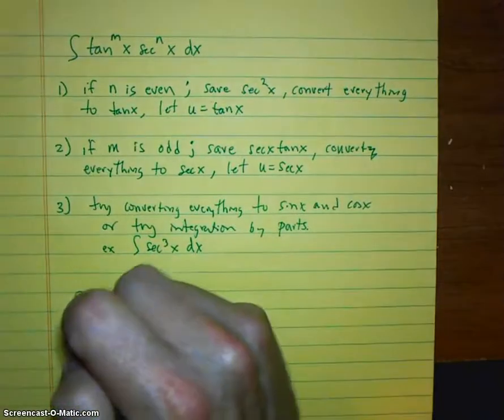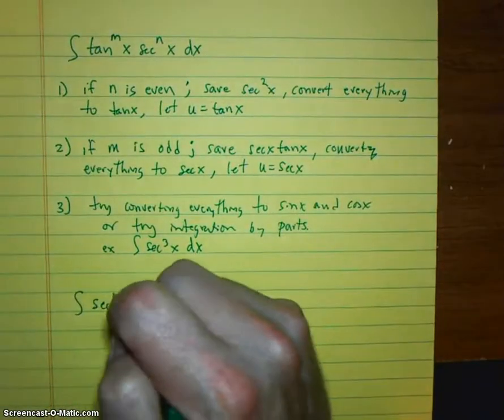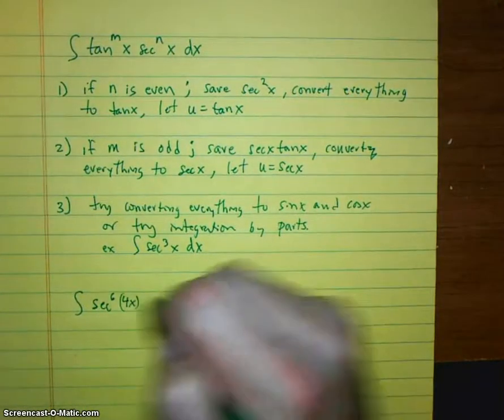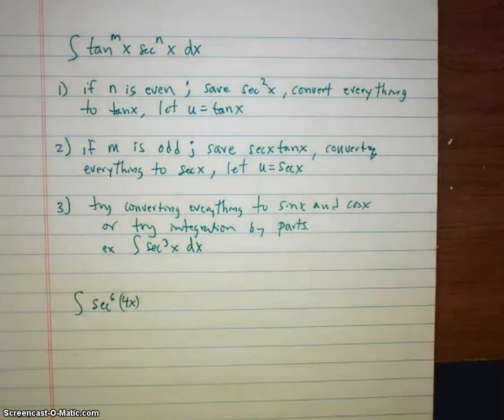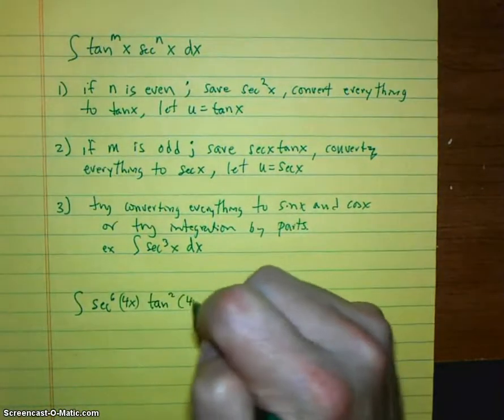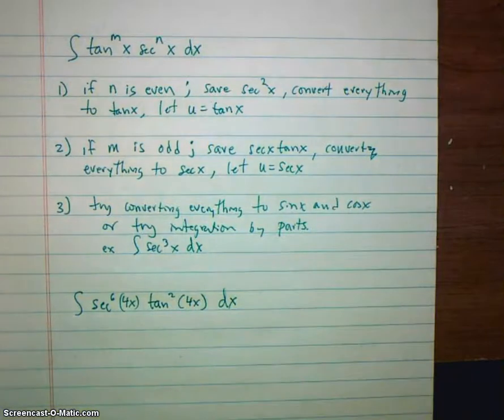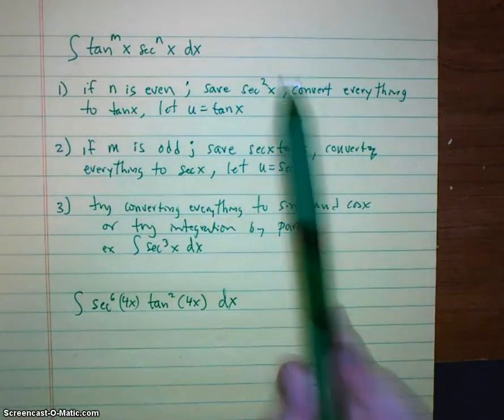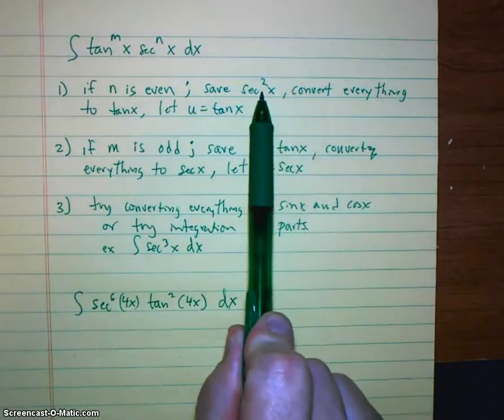Integral. Secant to the sixth of 4x. Tangent squared 4x dx. All right. Well, what we see here is that we're in the first situation. Secant is even.